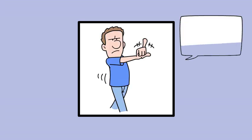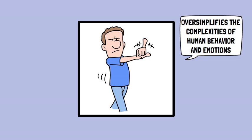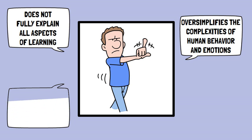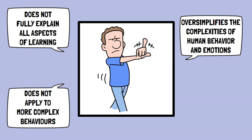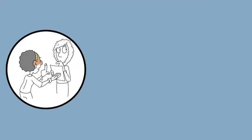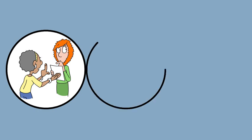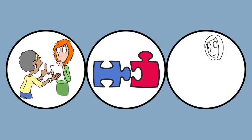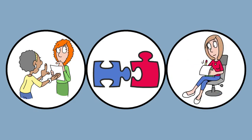Critics argue that classical conditioning oversimplifies the complexities of human behavior and emotions, and may not fully explain all aspects of learning or more complex behaviors. In conclusion, Pavlov's classical conditioning has profoundly influenced our understanding of learning and behavior. By exploring the mechanisms of association, we gain valuable insights into how organisms adapt to their surroundings, shaping the foundation of behavioral psychology.